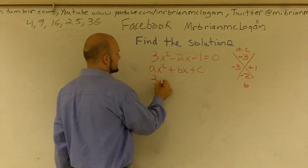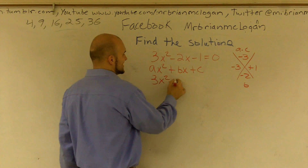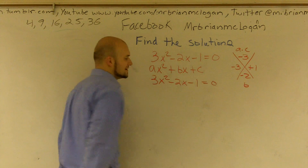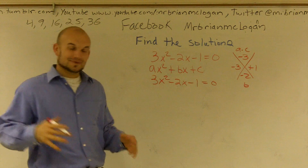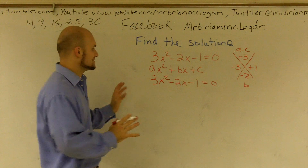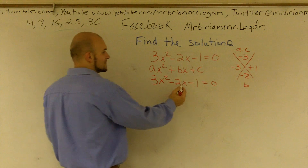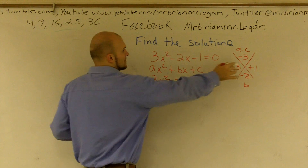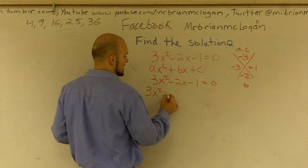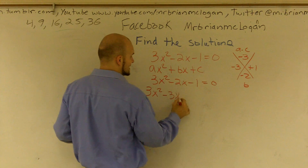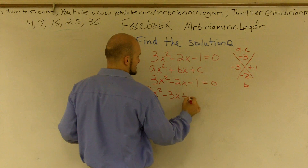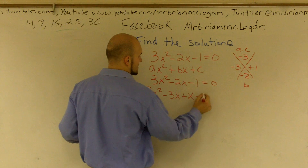So I have 3x squared minus 2x minus 1 equals 0. What I'm going to do is rewrite this equation with these two terms. So I'm going to write 3x squared minus 3x plus x minus 1.